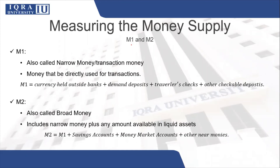There are two broad definitions used. Number one is M1, also called narrow money or transaction money — it is money used for transactions and includes currency held outside banks, demand deposits, traveler's checks, and other checkable deposits. This is basically money that is as good as cash because it can be very easily withdrawn and used for transaction purposes. Then you have M2, also called broad money, which cannot as easily be converted into cash — it takes some time but is still quite liquid. M2 includes short-term securities such as savings accounts, money market accounts, and other near-monies, added on top of M1. So M2 includes narrow money plus any other liquid assets that can be easily converted into cash.